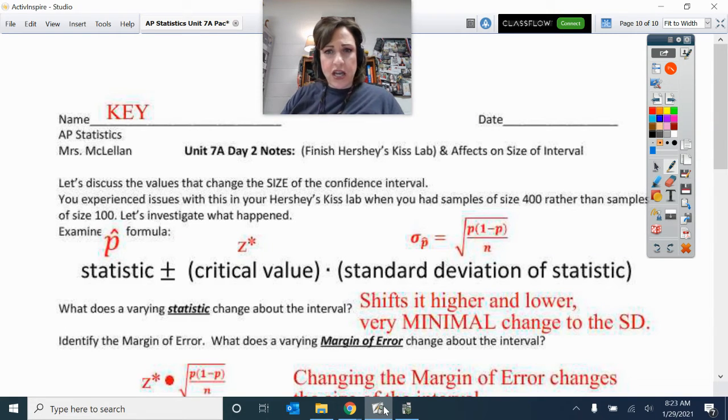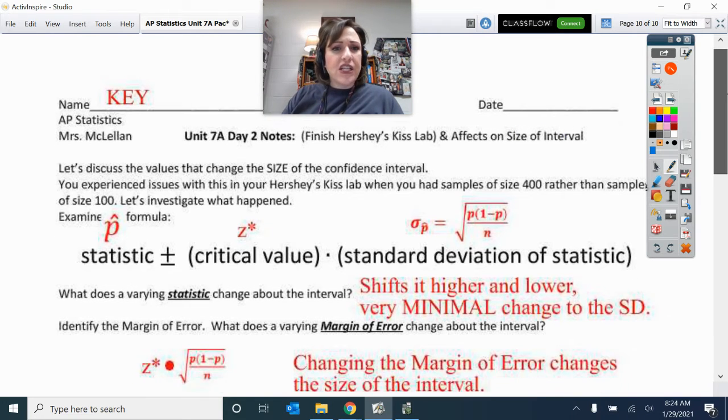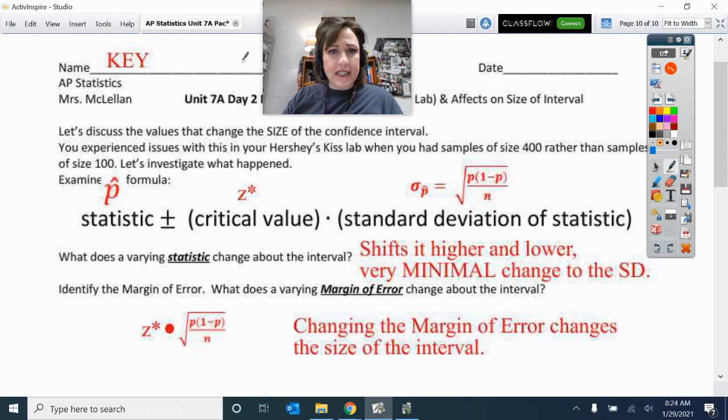Here's just a little culmination of everything that we have been doing on that Hershey's Kiss lab, really honing in on the items that affect the size of the interval. It kind of summarizes everything we've already been talking about. We're going to talk about the values that change the size of the confidence interval. You experienced this in that Hershey's Kiss lab when you had sample sizes of 400 rather than sample sizes of 100.